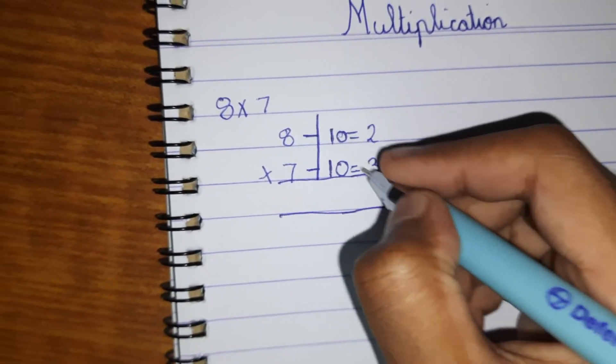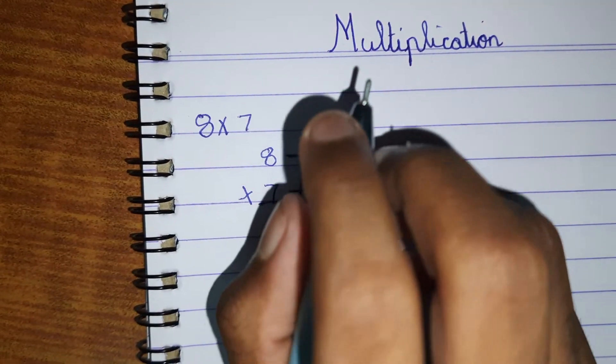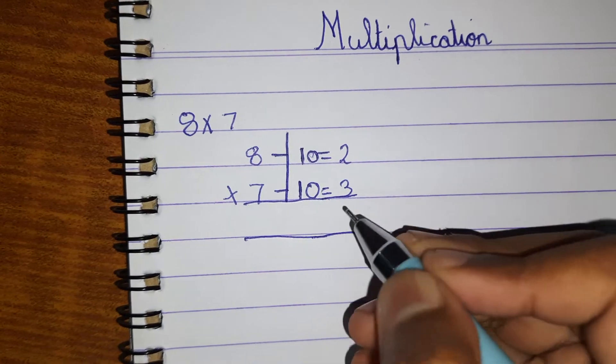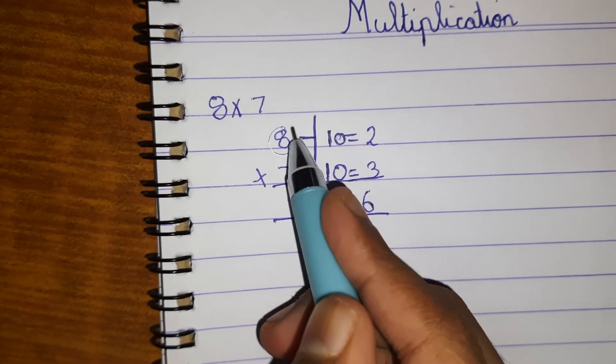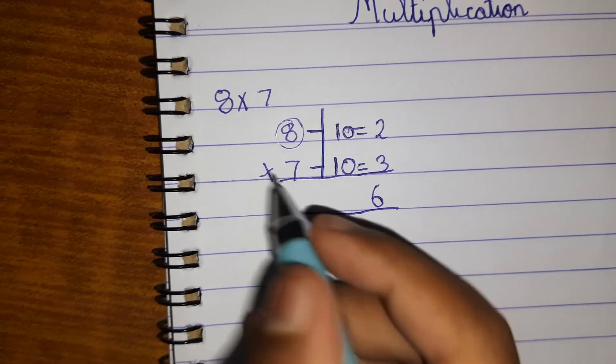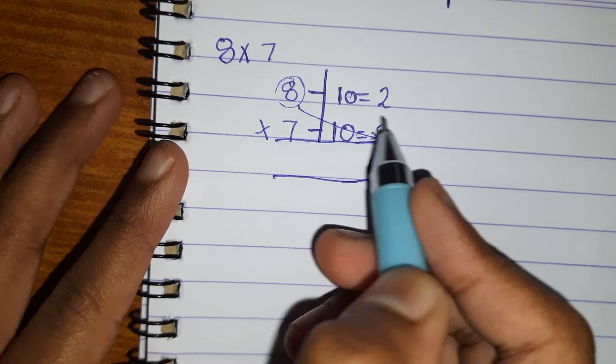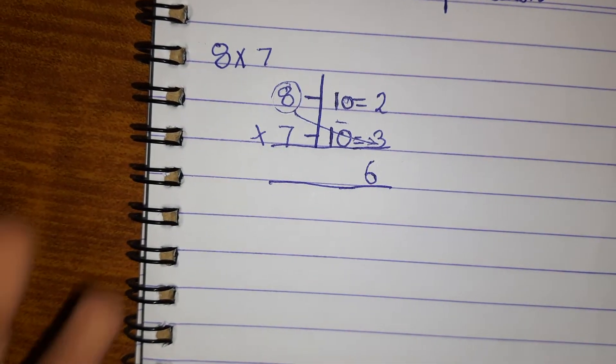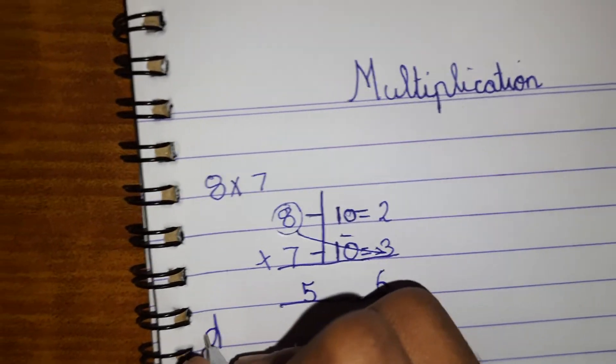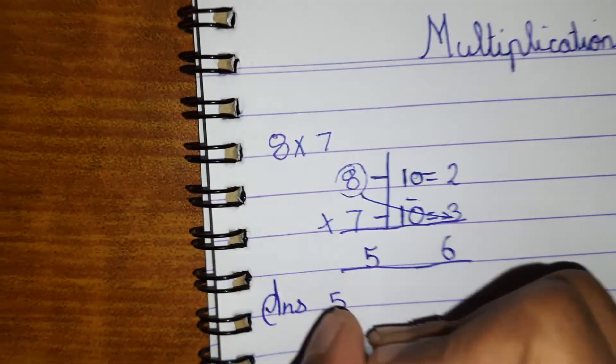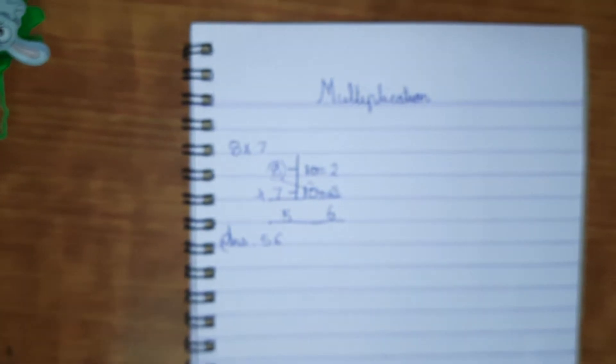So what you do is simple: you just take this number and multiply it with the down number. 2 multiplied by 3, which is simple, 6. Now you take this number on the top and subtract the number with this number. 8 minus 3 is 5, and the answer will be 56.